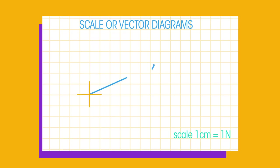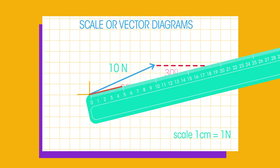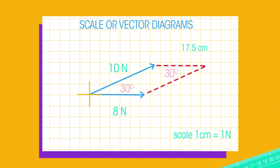Draw the first force. Step 2, draw the second force at the correct angle. Step 3, connect the lines by drawing a parallelogram. Step 4, measure the line from the start to the opposite corner. Use your scale to work out the magnitude of the force. For example, 17 centimetres equals a resultant force of 17 newtons.